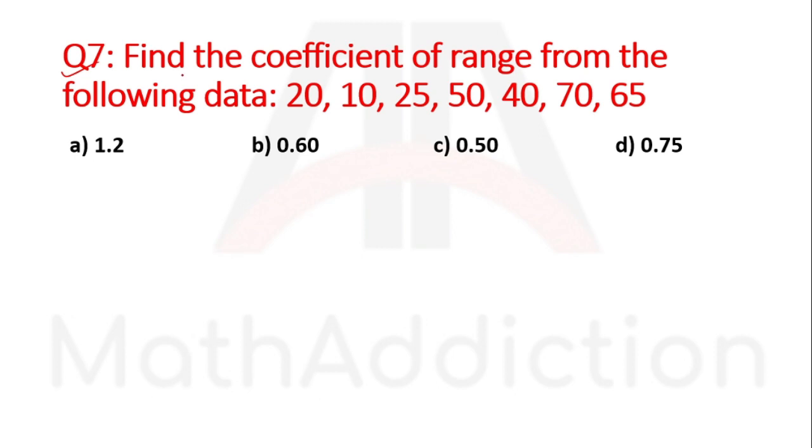Question number seven: Find the coefficient of range from the following data: 20, 10, 25, 50, 40, 70, 65. This question is especially important if you're preparing for NRB officer or NRB assistant 2. The coefficient of range formula is largest minus smallest divided by largest plus smallest.